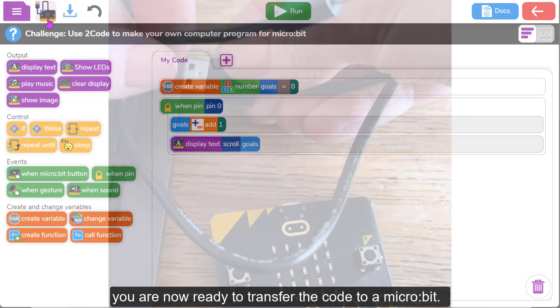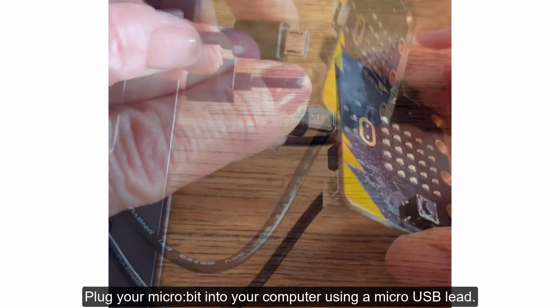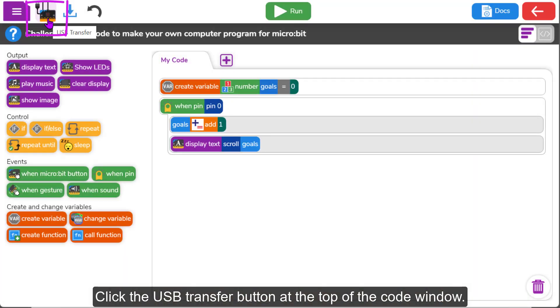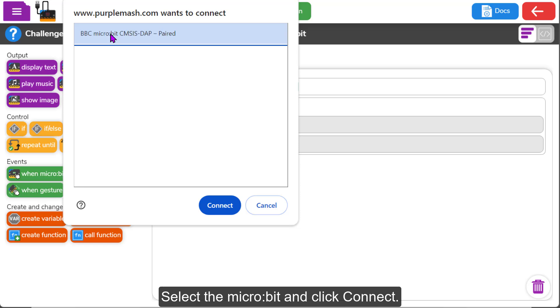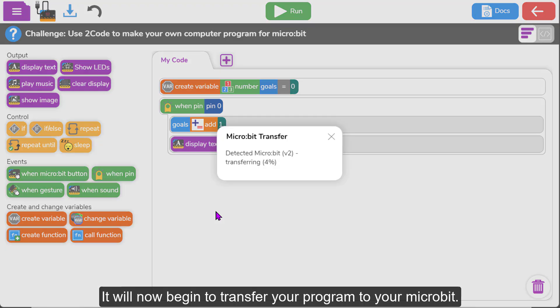Plug your microbit into your computer using a micro USB lead. Click the USB transfer button at the top of the code window. It should recognise the microbit automatically if it is connected correctly. Select the microbit and click connect. It will now begin to transfer your program to your microbit.